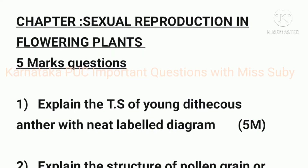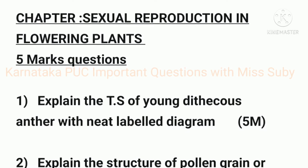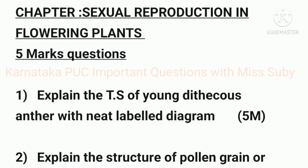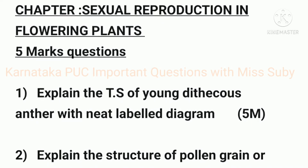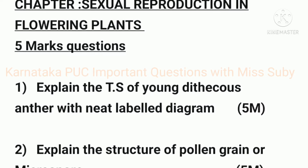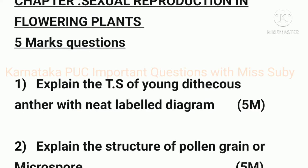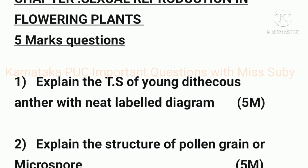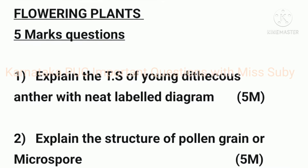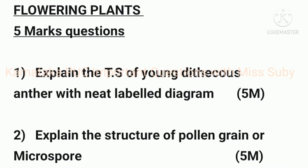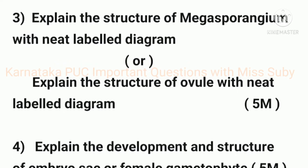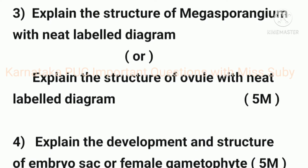From the chapter sexual reproduction in flowering plants, the 5 mark questions are: the first question is explain the layers of young anther and pollen sac with neat labelled diagram. The second question is explain the structure of pollen grain, or explain the structure of microspore — it carries 5 marks.